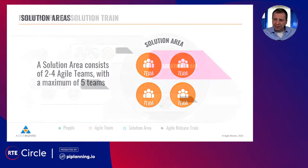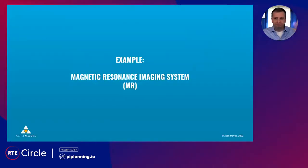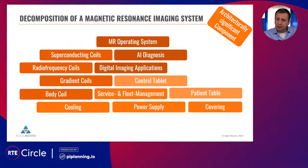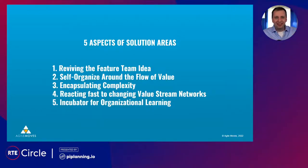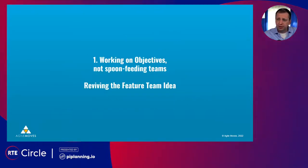Here we have an example of a magnetic resonance imaging system — it's composed of many different architecturally significant components. We have five aspects we are trying to explain with this MRI example. The first is reviving the feature team idea — we don't want to spoon-feed the teams. And we want to work on objectives together.